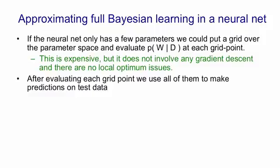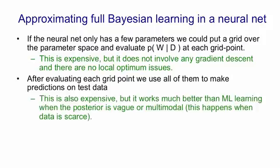Once we've decided on the posterior probability to assign to each grid point we then use them all to make predictions on the test data. That's also expensive. But when there isn't much data it'll work much better than maximum likelihood or maximum a posteriori.